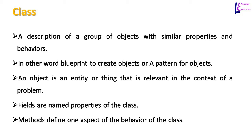An object can be considered an entity or thing that is relevant in the context of a problem. Fields are named properties of a class, and methods define one aspect of the behavior of the class. Examples of classes can be animal, person, and student.